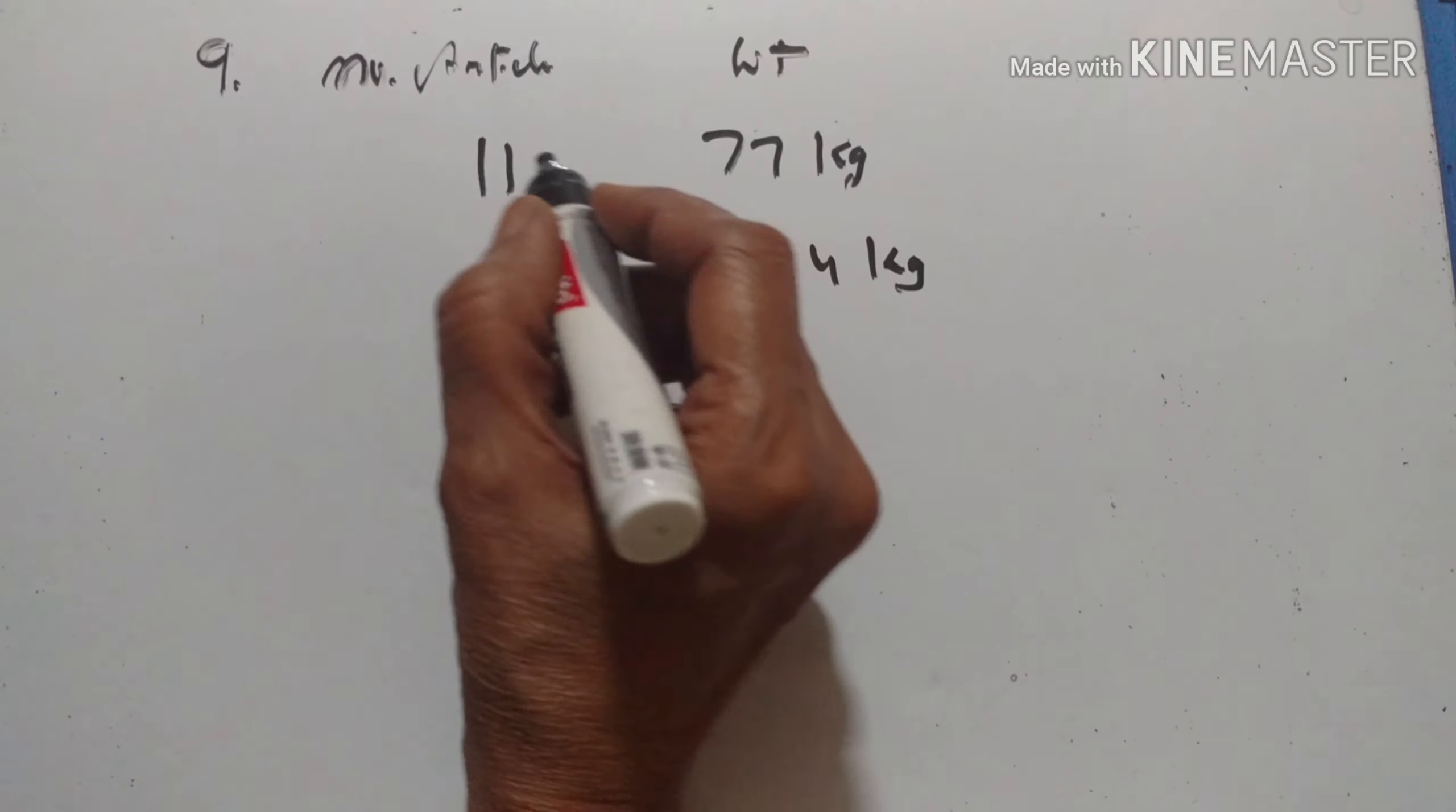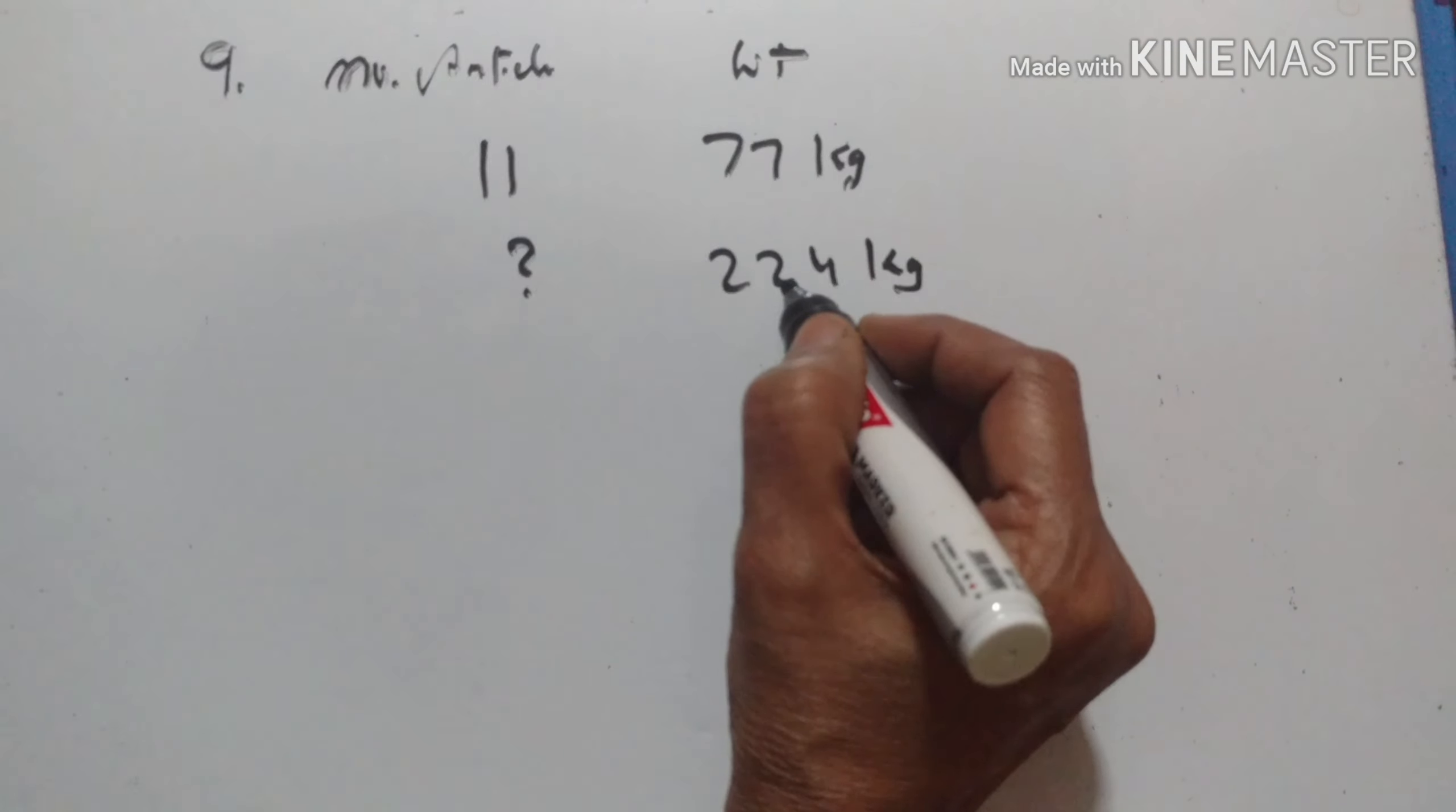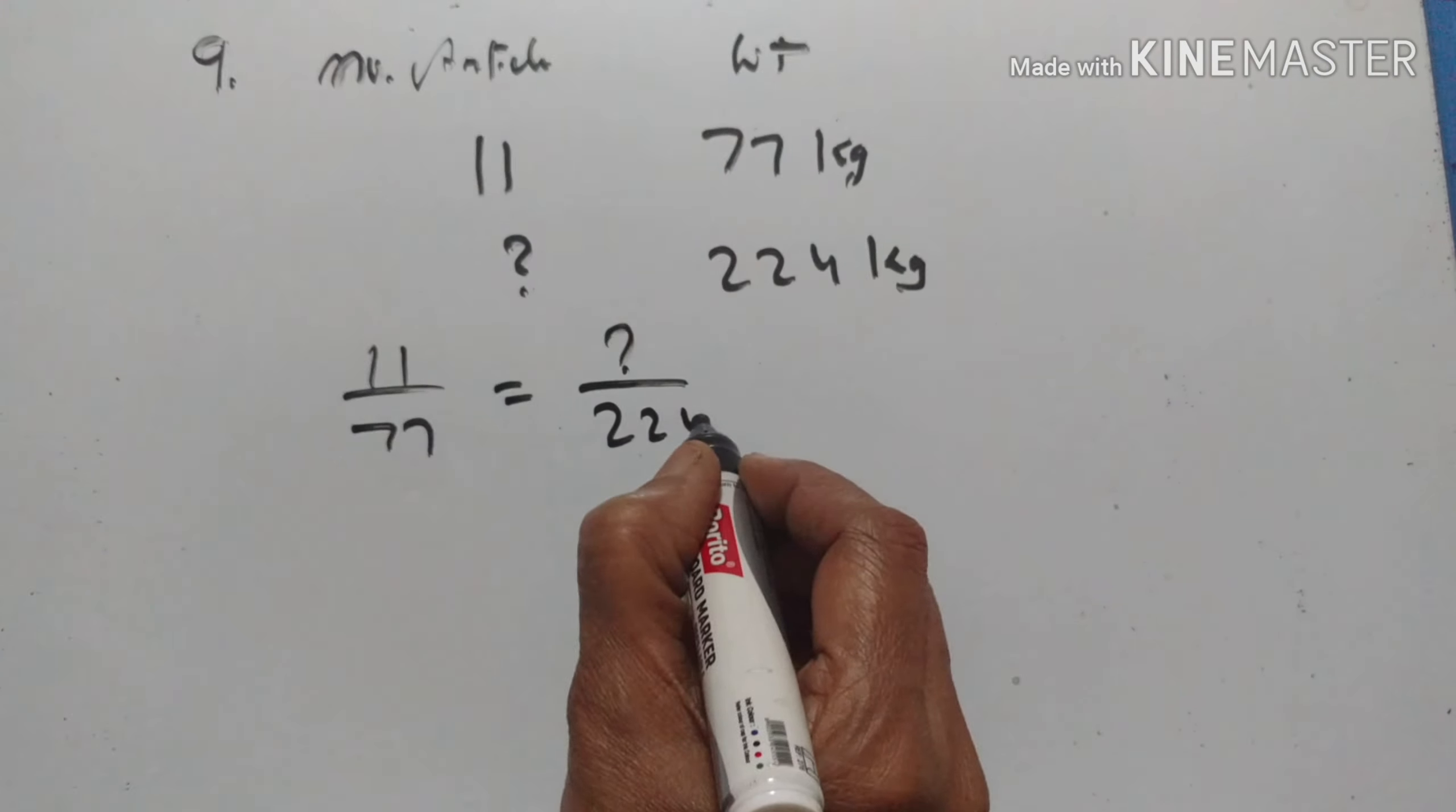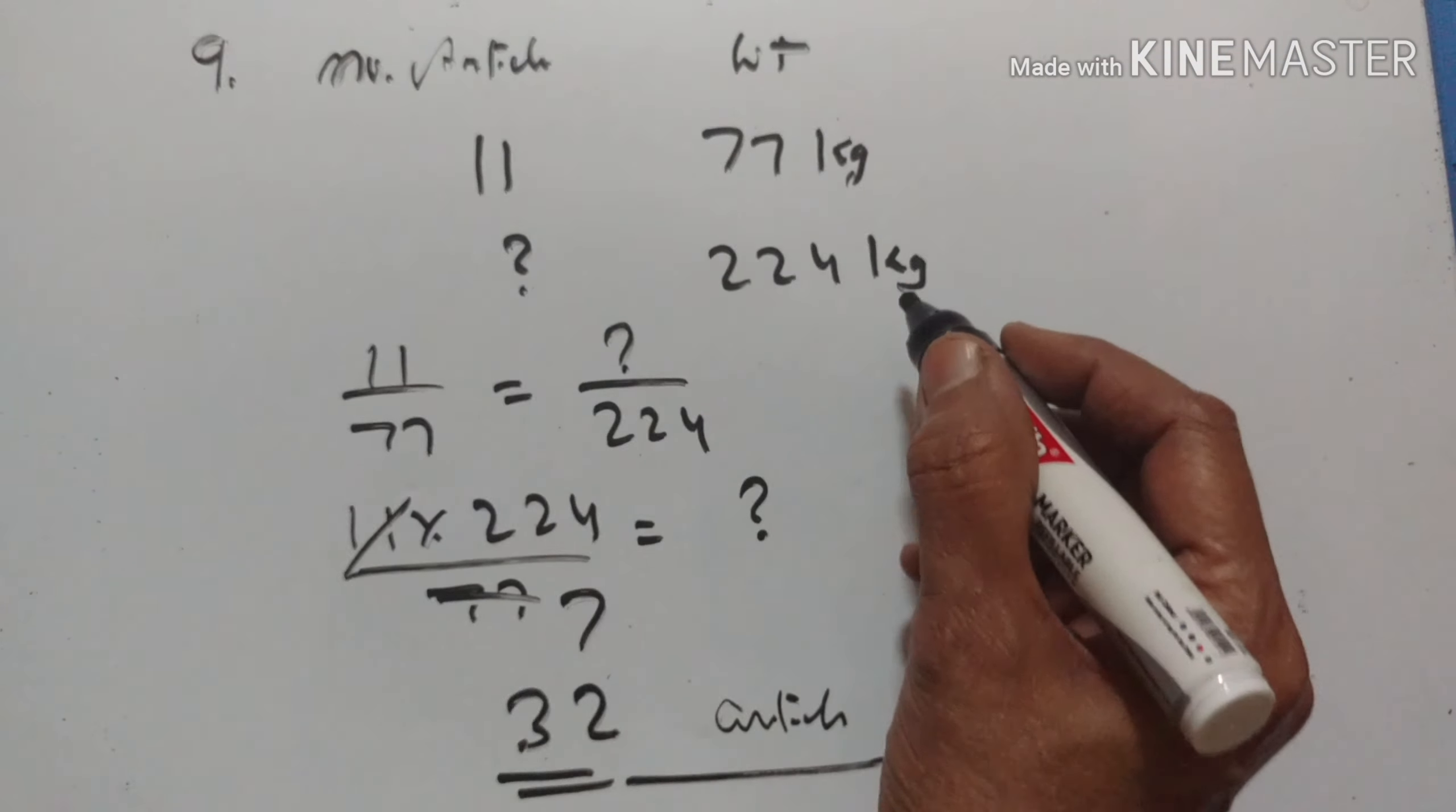9th problem. If the total weight of 11 identical articles is 77 kg, how many articles of the same type would weigh 224 kg? This is direct variation. So X1 upon Y1 is equal to X2 upon Y2. 11 into 224 upon 77. 11 is the 11, 7 is the 11, 7 3s are 21, 7 2s are 14. So 32 articles weigh 224 kg.